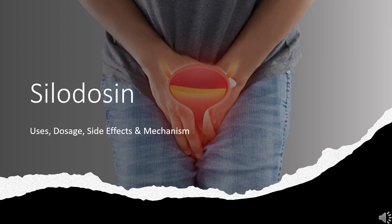Silodosin is an alpha-1 adrenergic receptor antagonist used to treat symptoms associated with benign prostatic hyperplasia, BPH.